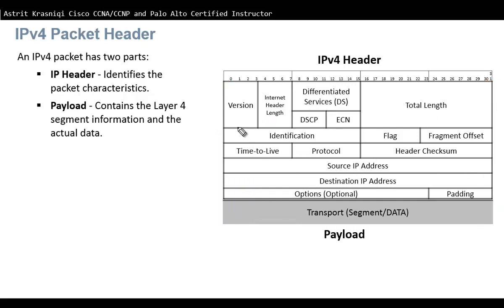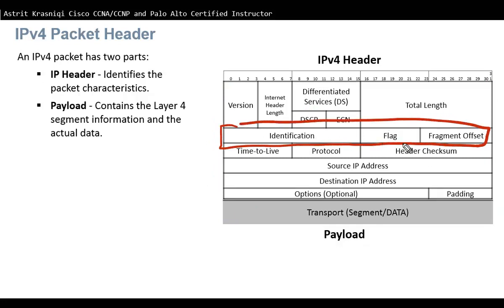The next three fields — Identification, Flag, and Fragment Offset — I'm going to explain at the end.